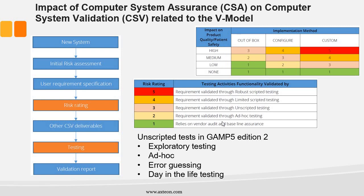In terms of testing, GAMP 5 second edition incorporates and extends on CSA concepts. Apart from former scripted testing, unscripted tests such as exploratory testing and ad-hoc testing were introduced. It is worth mentioning that both testing methods originate from the CSA concept.